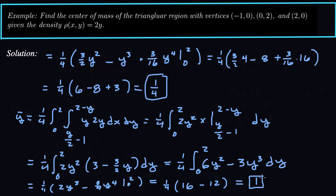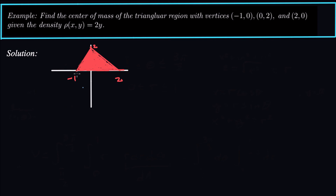So our center of mass is at (1/4, 1) — a little to the right of the y-axis and halfway up. The density function increases with y, so the lamina gets denser toward the top. Even though there's less substance near the top, it's more dense, so the center of mass ends up halfway up at y = 1. And that's how we do it.